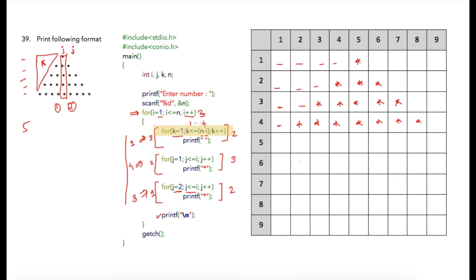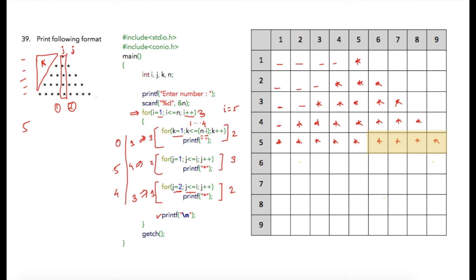In the final iteration, i is five and n minus five equals zero, so k less than or equal to zero is false and the spaces loop does not execute. The first star loop executes five times because j goes from one to five, printing five stars. The final for loop runs from two to five, so four stars are printed. Because of the last printf newline, the cursor shifts and the program terminates.